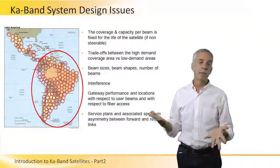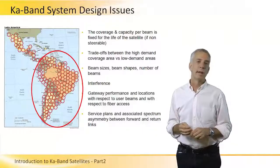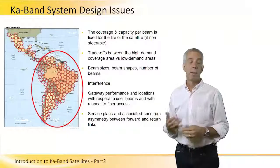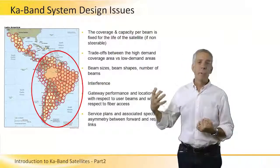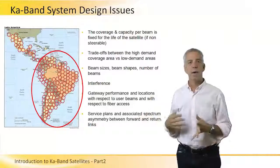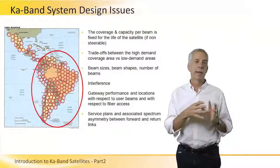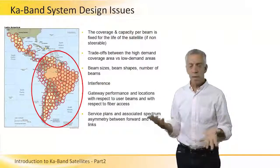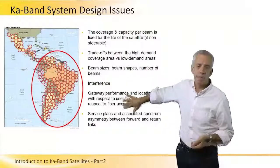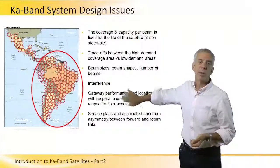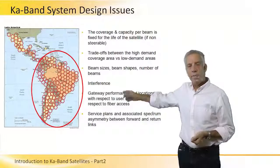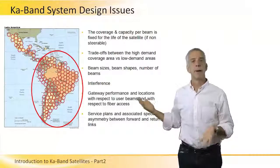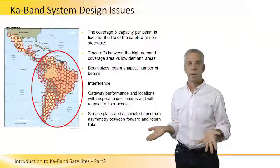The number of beams impacts satellite design and launch costs. It may make more sense to have a partial payload — perhaps a mix of KU band and Ka band capacity. Interference is another issue, since many beams can be directly adjacent. Offsetting them in frequency and polarization helps, but there's still an interference factor that must be accounted for in link budgets.